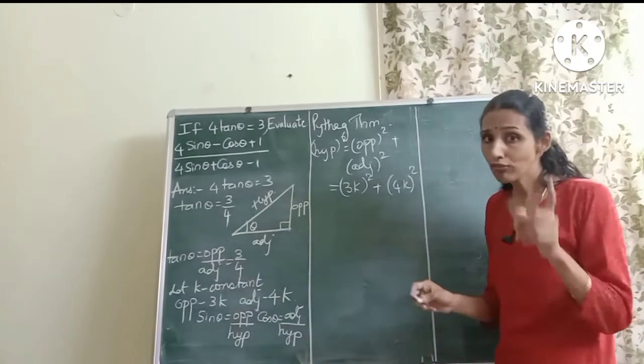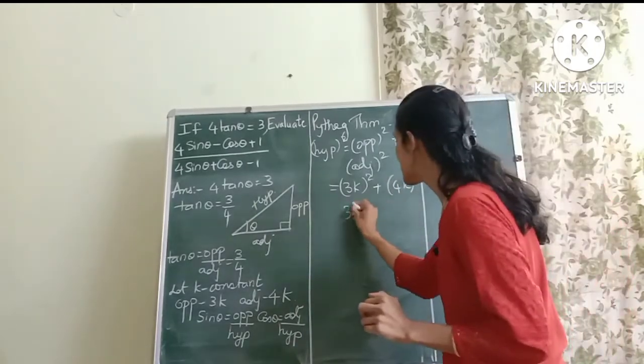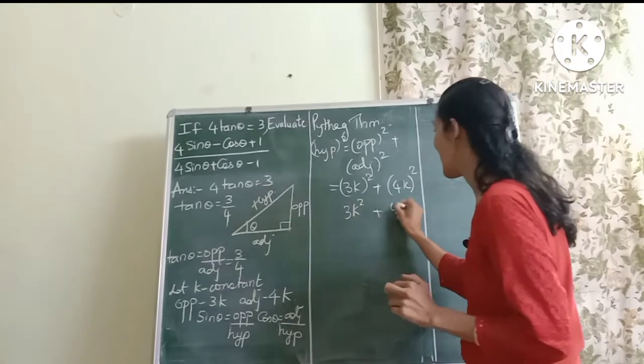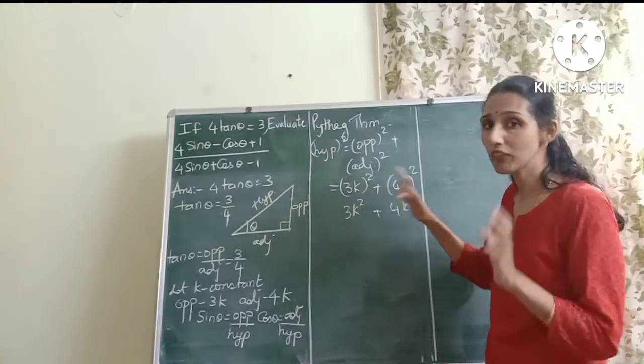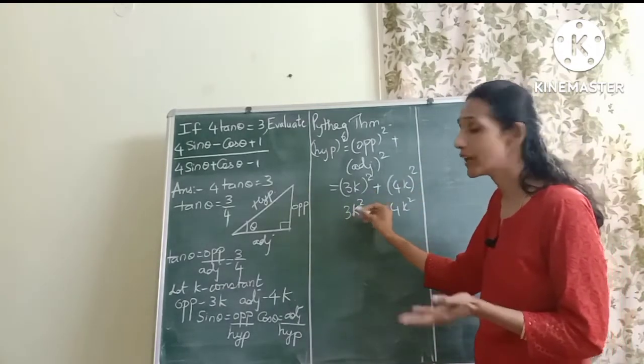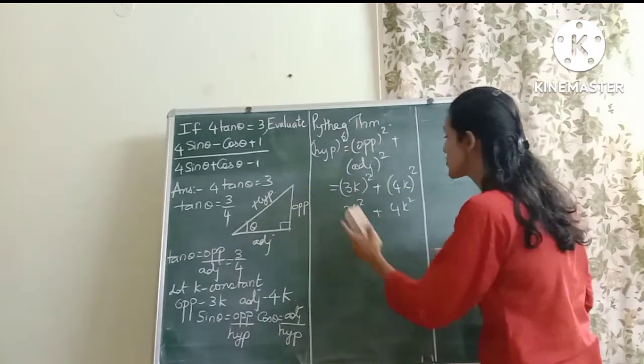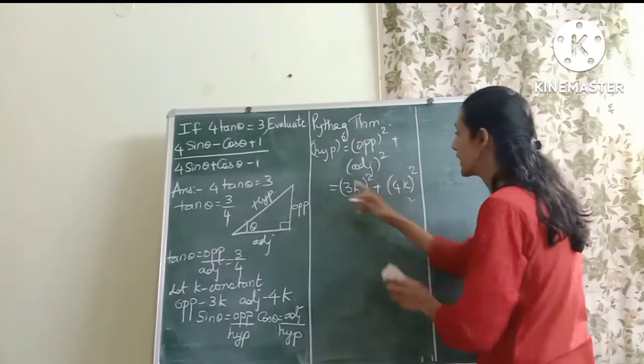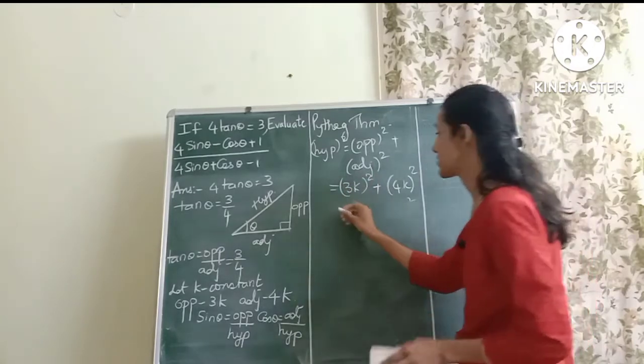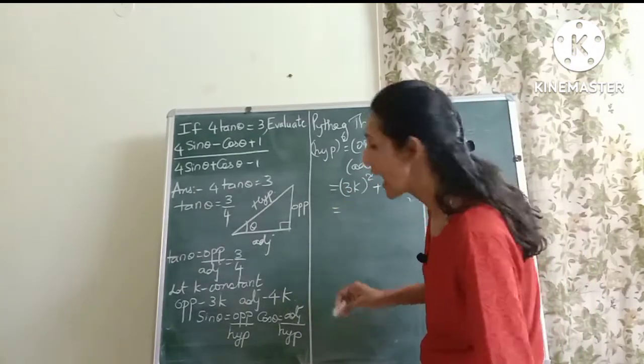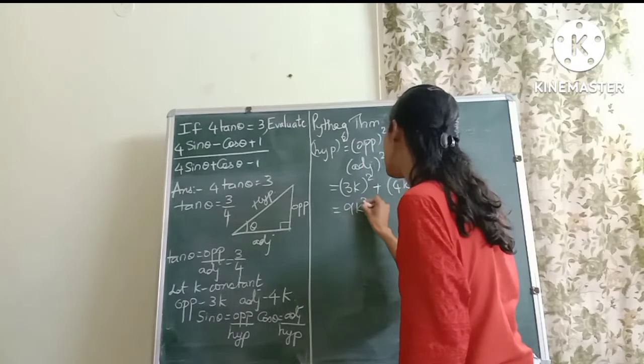Now often students make this mistake. They just write it as 3k square and 4k square. Now these two are very different. Here you will not be squaring the 3 at all. So always remember friends to put the bracket, write it as 3k the whole square.